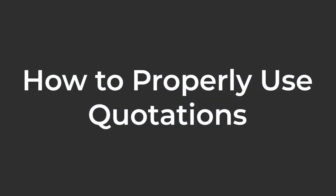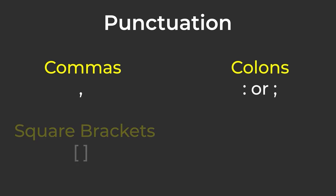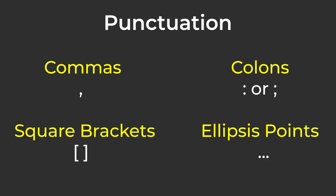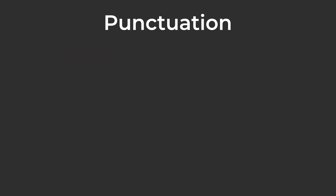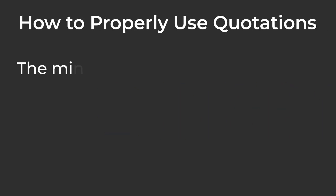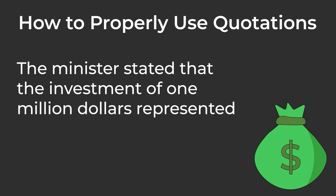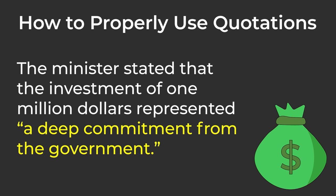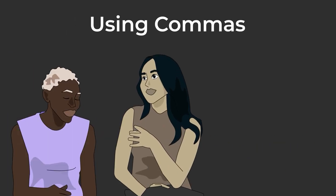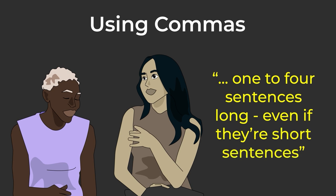So how do you do quotations right? Punctuation plays a part. To use quotations effectively, you'll likely need commas, colons, square brackets, and ellipsis points. However, if the quotation is not a complete sentence, no punctuation except quotation marks is required. For example, the minister stated that the investment of $1 million represented "a deep commitment from the government." Use a comma when your quotation is from one to four sentences long, even if they're short sentences.